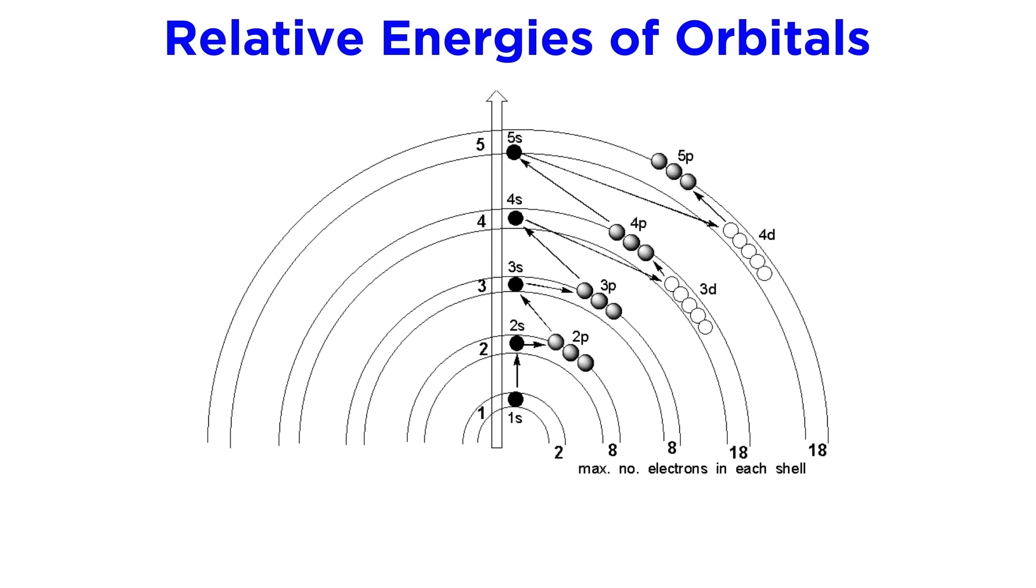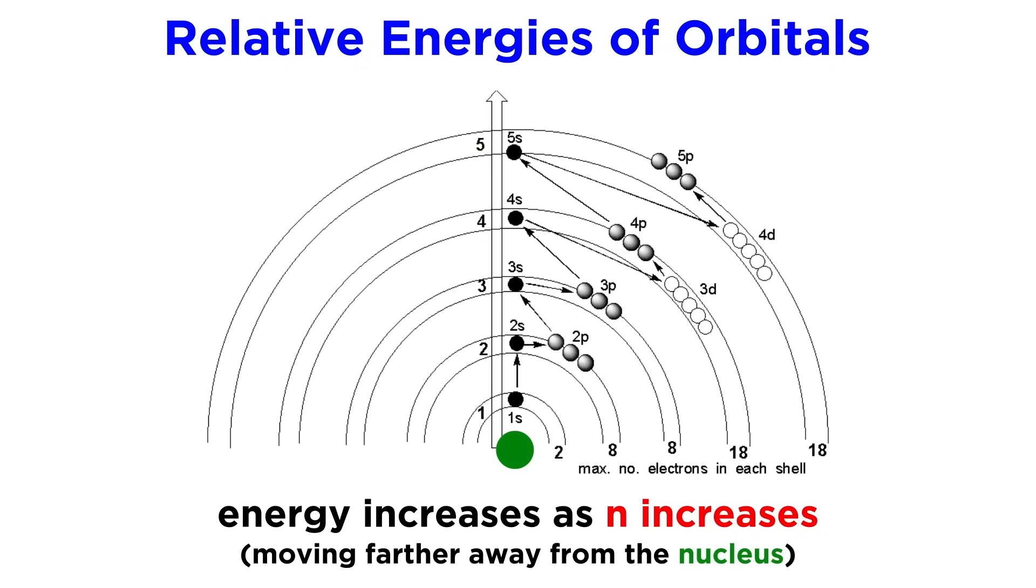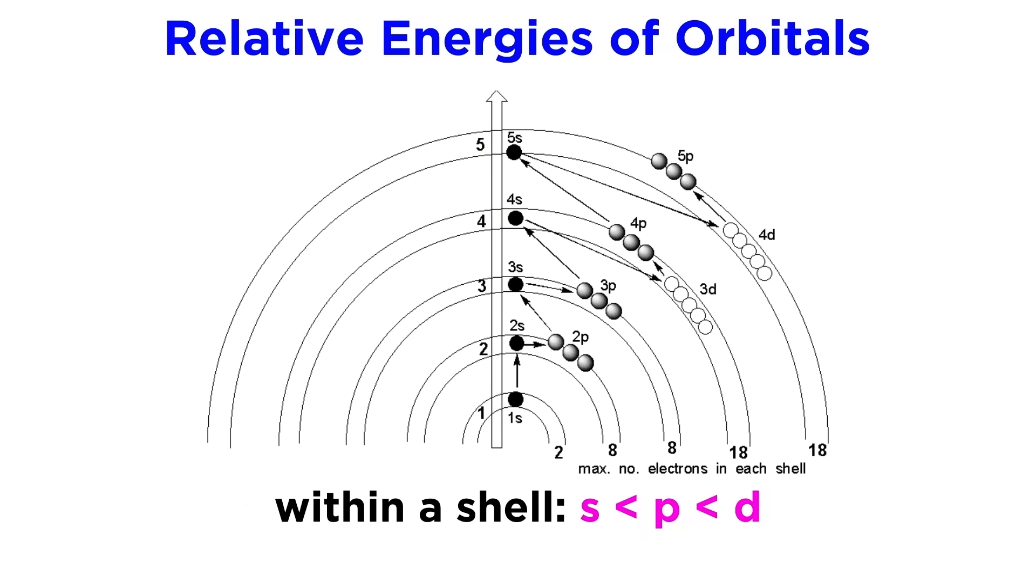We must now mention some details about the relative energies of these orbitals, in the context of the order in which electrons fill up these orbitals. We already know from the Bohr model that as n increases, the energy of the orbital increases, as we are moving farther away from the nucleus. But we should also know that within a shell the energy increases from s to p to d orbitals, due to electron repulsion and orbital shape.